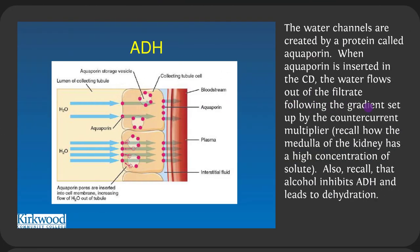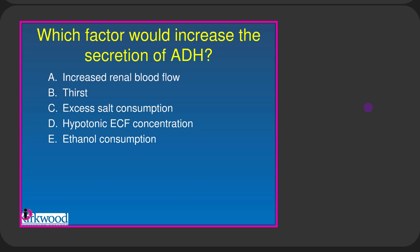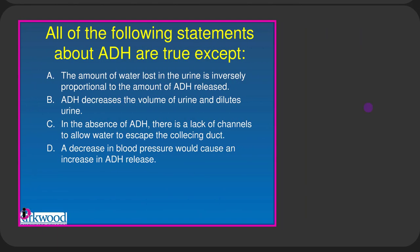When aquaporin is inserted into the collecting duct, water flows out of the filtrate following the concentration gradient set up by the countercurrent multiplier. The medulla of the kidney has a high concentration of solute set up by the countercurrent exchanger, so when holes are put in the collecting duct, water is drawn out of the filtrate. Also recall that alcohol inhibits ADH and leads to dehydration. Excess salt consumption would increase ADH secretion because the posterior pituitary senses increased salt concentration. ADH decreases the volume of urine and concentrates it.